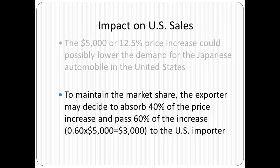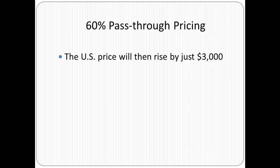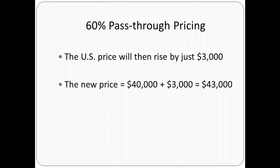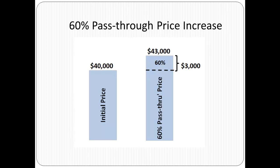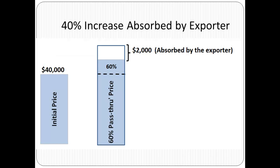To maintain market share, the exporter may decide to absorb 40% of the price increase and pass 60% of the increase — which is $3,000 — to the US importer. So with 60% pass-through, the US price would rise by just $3,000 as opposed to $5,000, so the new price is going to be $43,000. Here we have a graphical view of the 60% pass-through.